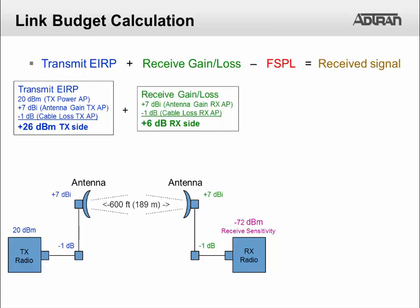On the receive side we have a 7 dBi antenna with a cable connector loss of 1 dB. So we have a 6 dB gain on the receive side.